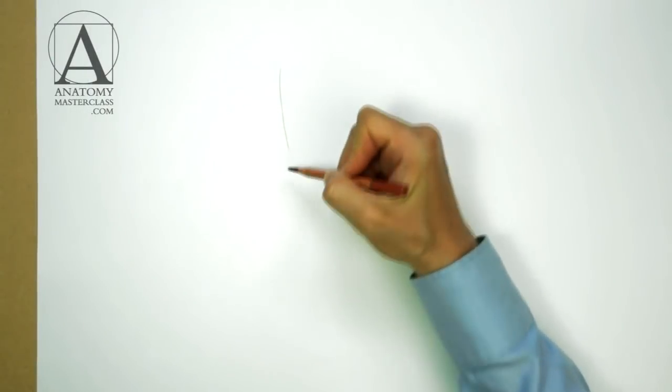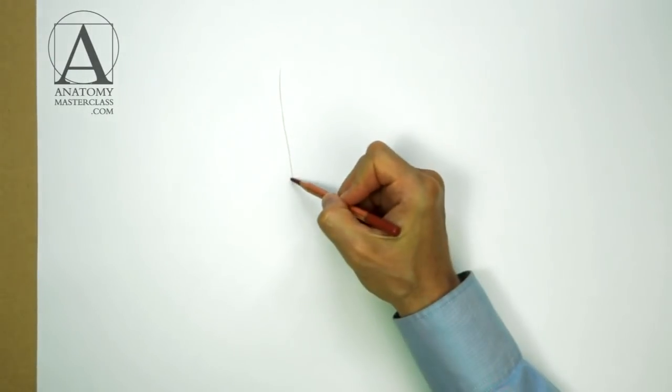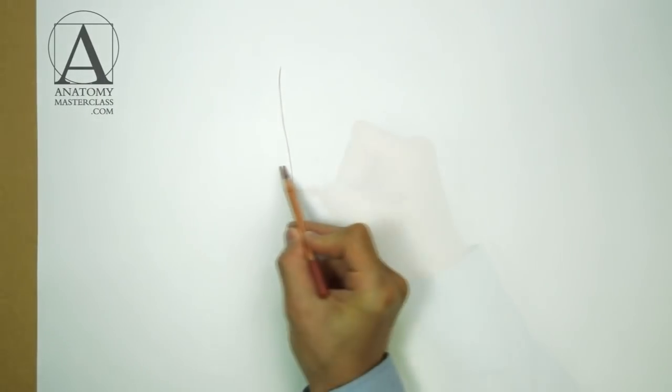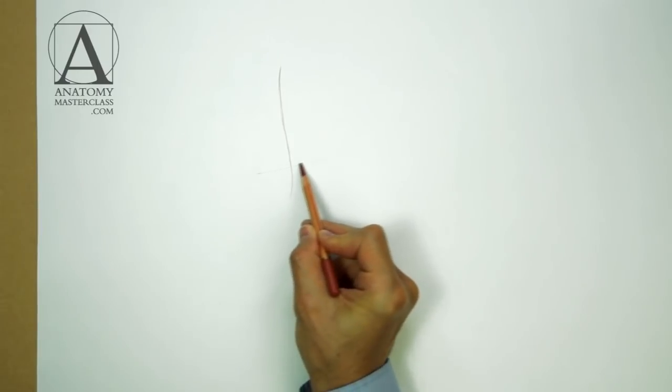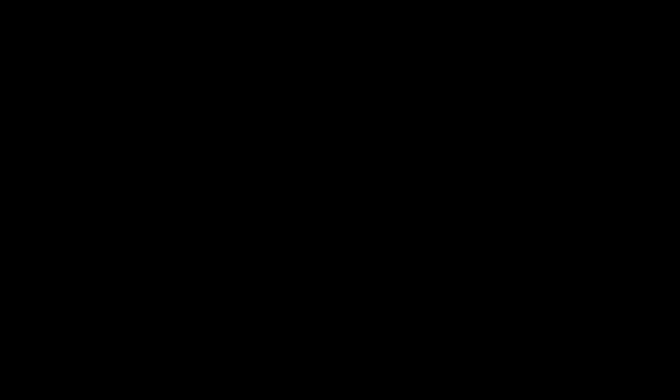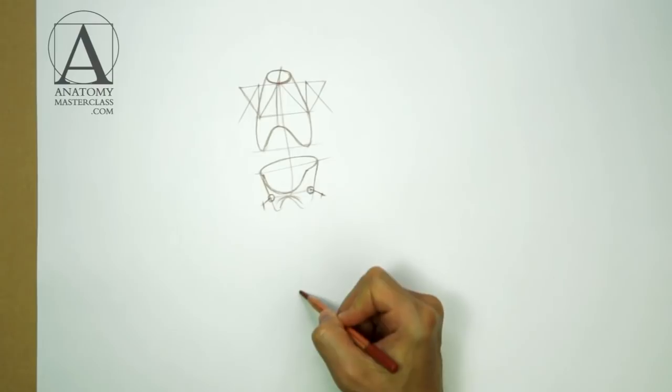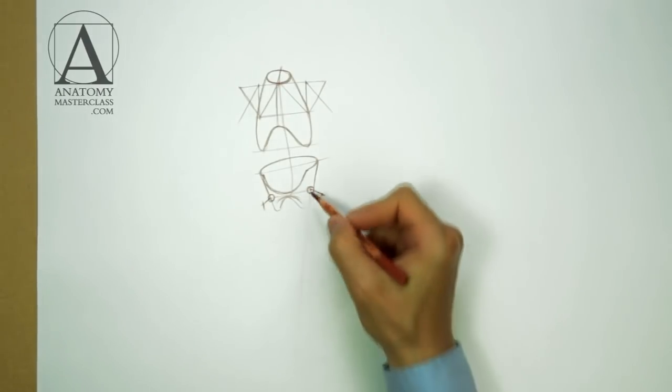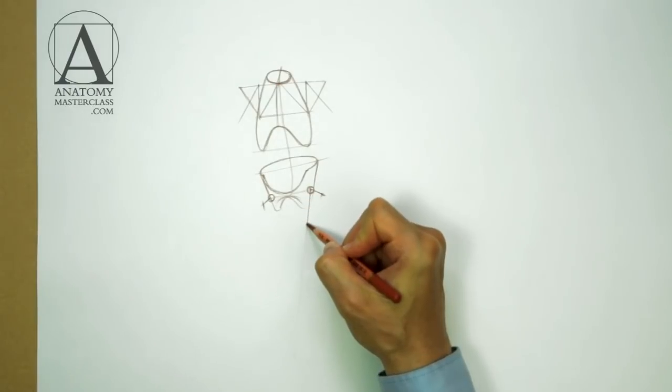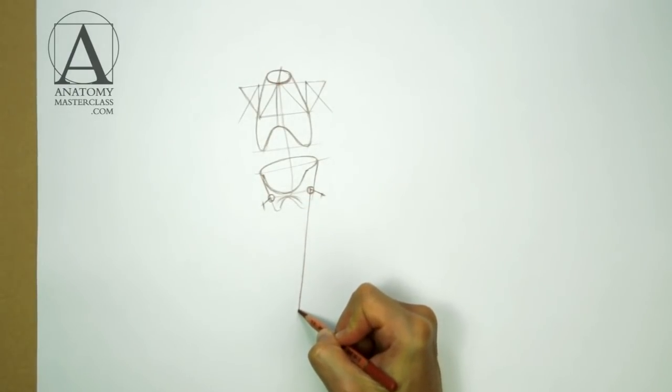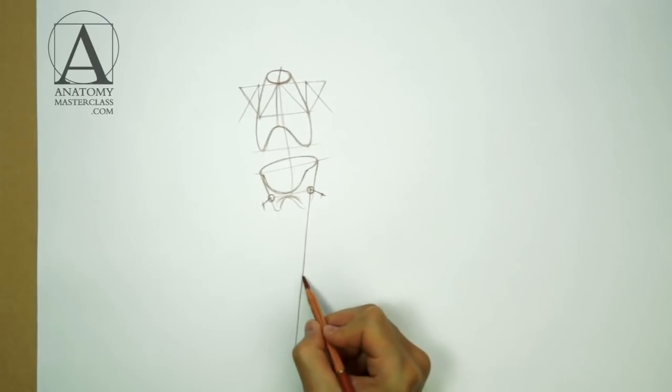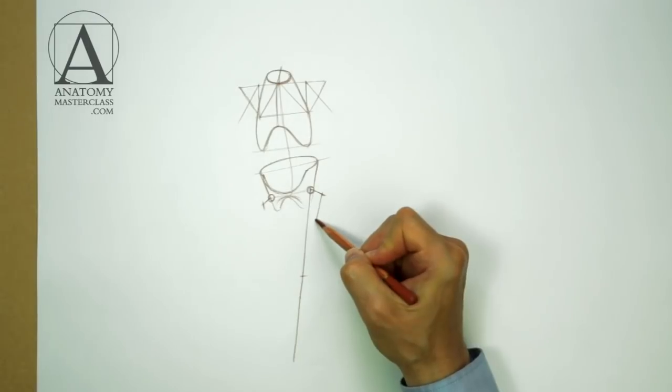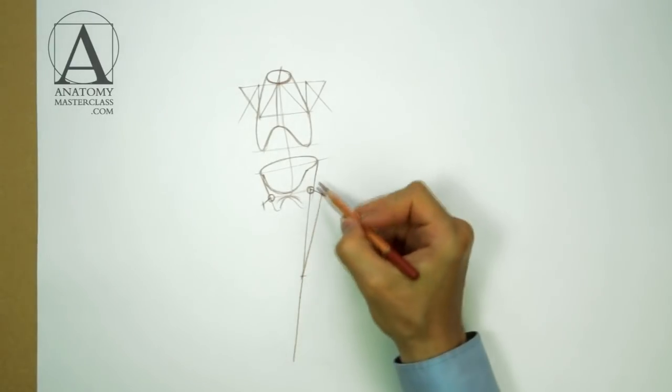The figure stands in the contrapposto position. The word contrapposto in Italian means counterpoise. The axis of the supporting leg is not vertical, but tilted. It points to the footprint which almost coincides with the projection of the body's center of gravity to the ground. The axis of the upper leg bone is tilted even more.